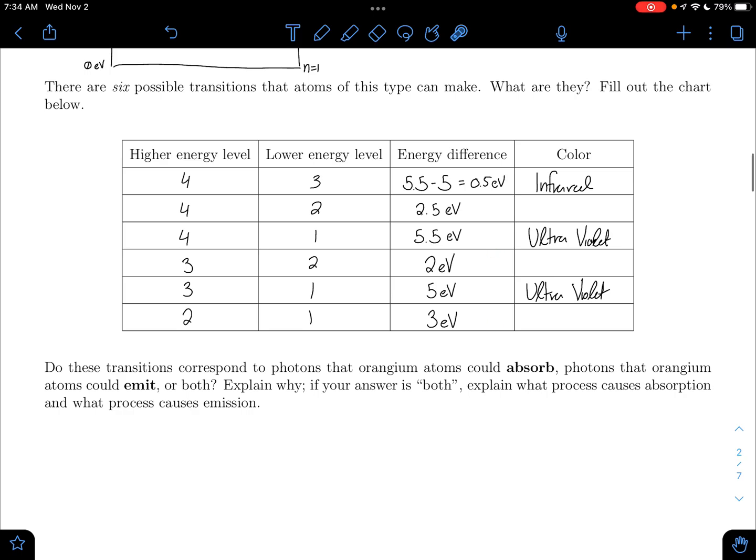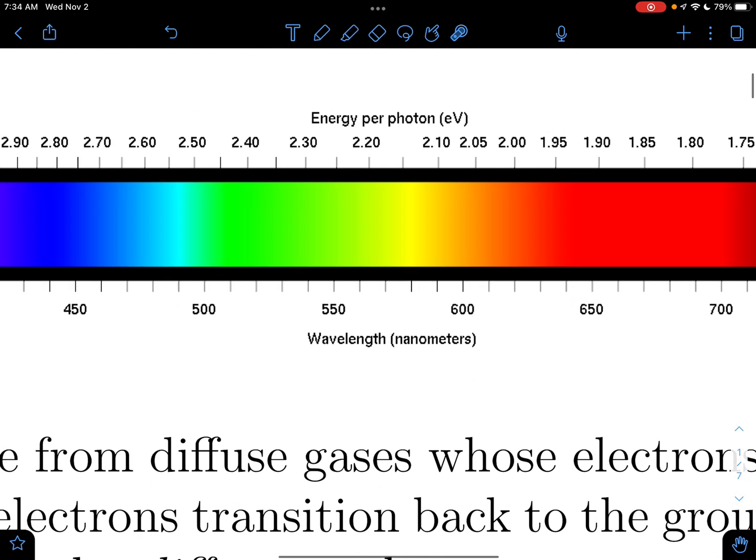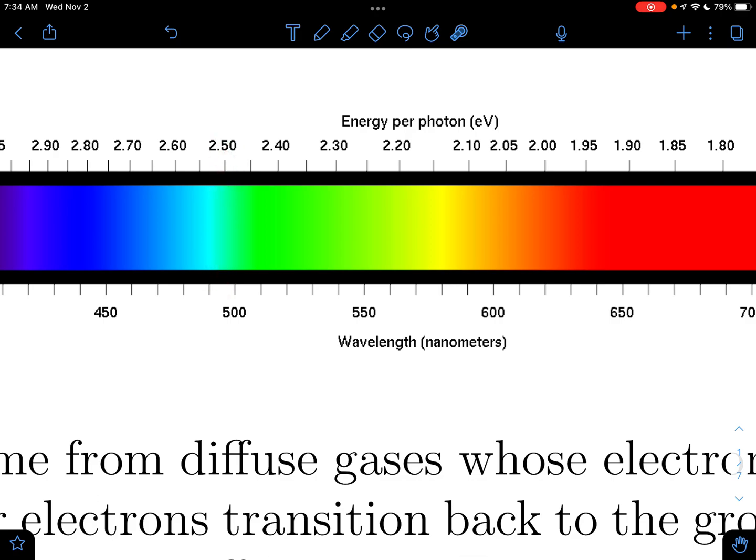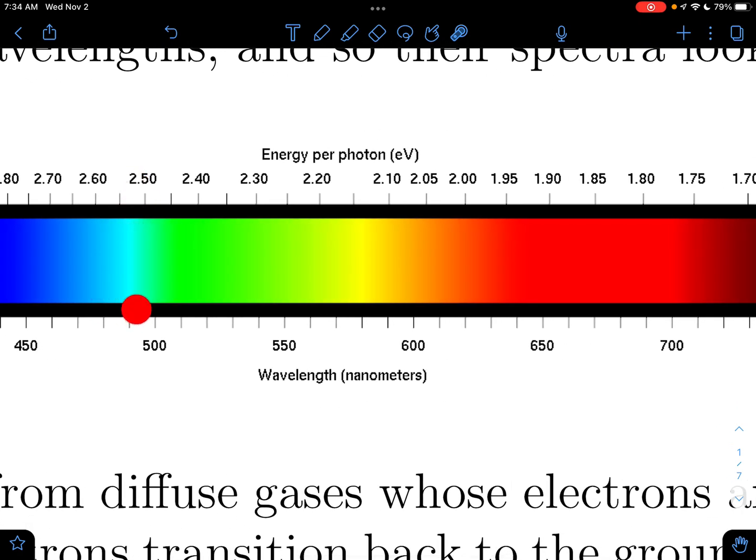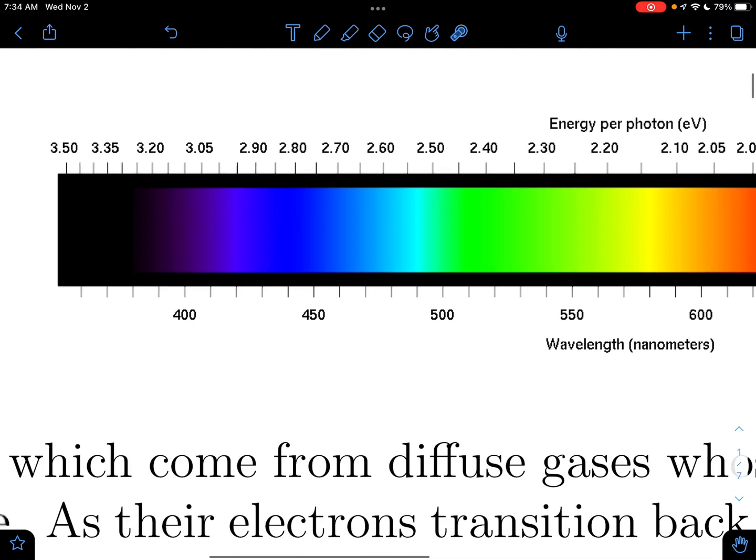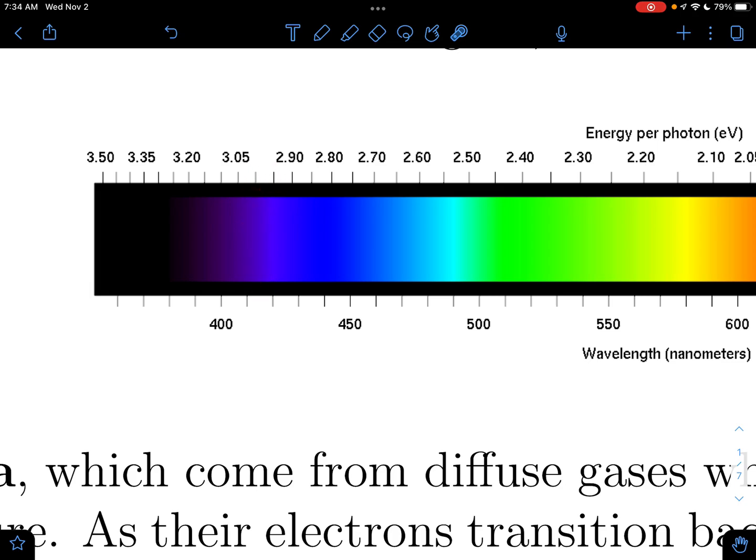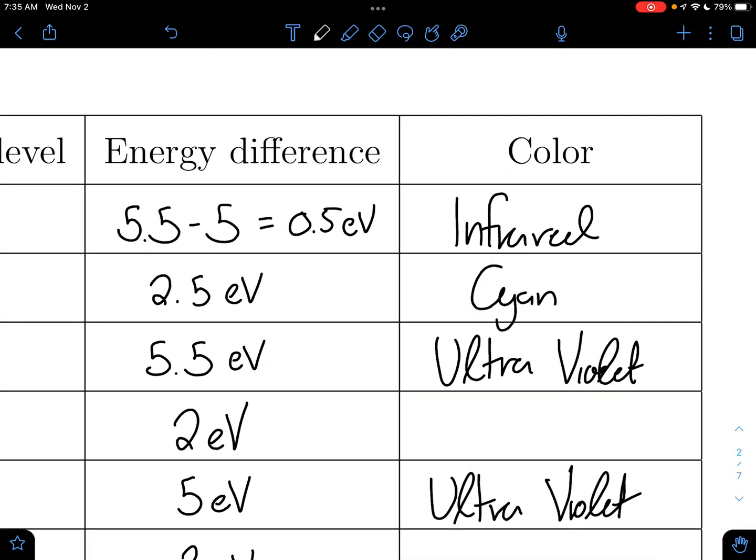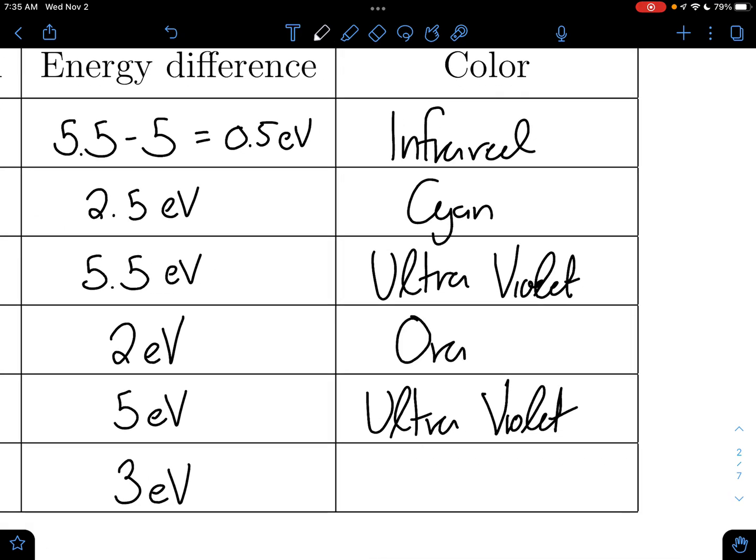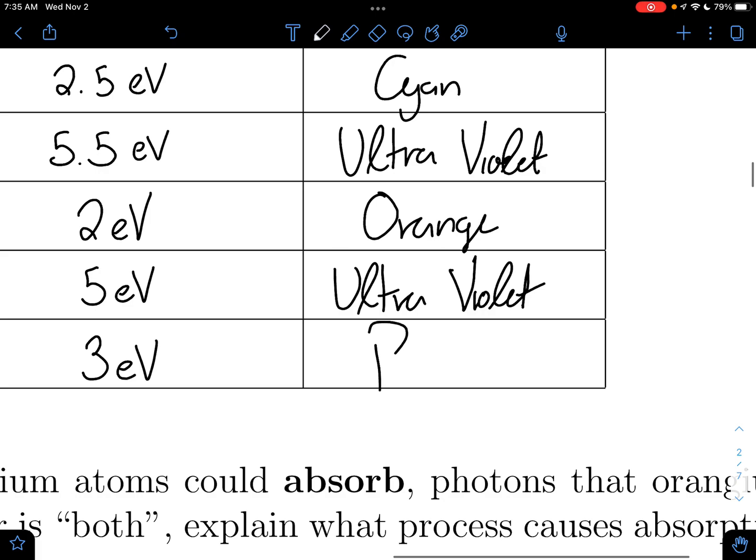Then we have 2.5, 2, and 3. So if we look, 2.5 is about here. It's kind of this greenish blue. I'm going to call it cyan. If you say anything in this range of like, this greenish blue or like a light blue, it'll all be right. I'm just being specific about it. 2.5 is cyan. Our 2 is going to be this kind of burnt orange red. Again, if you say anything close to that, it's fine. And then 3 is somewhere in here. It's kind of in between, but it's going to be like a purplish color.